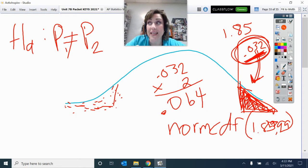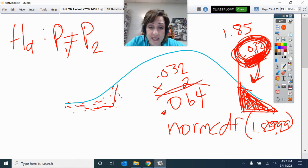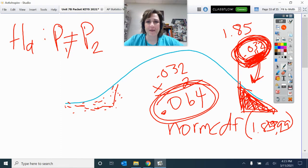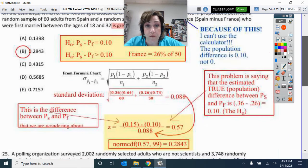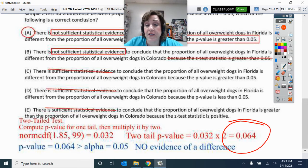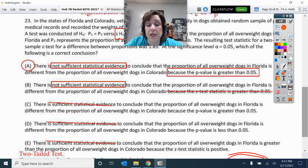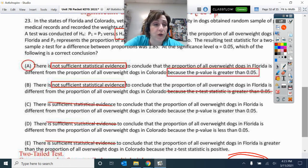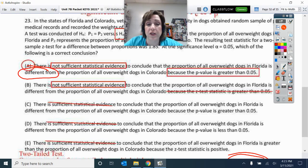And that then is not significant. With the one-tailed at 0.032, it's lower than alpha so we are rejecting. But with this one at 0.064, we are failing to reject. So interesting that you would have those different conclusions. The p-value for those two tails is 0.064, therefore we do not have sufficient statistical evidence to conclude that the proportion of overweight dogs in Florida is different from the proportion in Colorado. That's because the p-value was greater than 0.05.